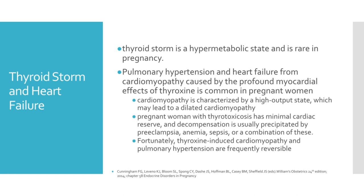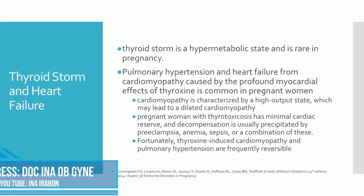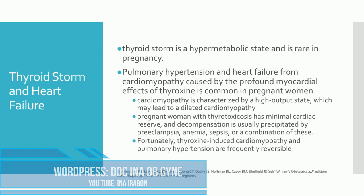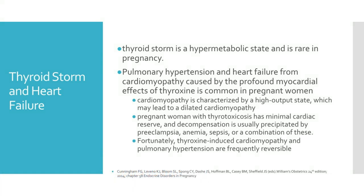And finally, fetal thyrotoxicosis after maternal thyroid gland ablation, usually with 131-I radioiodine, may result from transplacental thyroid-stimulating antibodies. Thyroid storm and heart failure are both acute and life-threatening in pregnancy. Thyroid storm is a hypermetabolic state and is rare during pregnancy. In contrast, pulmonary hypertension and heart failure from cardiomyopathy caused by the profound myocardial effects of thyroxine is common among pregnant women. Cardiomyopathy is characterized by a high output state which may lead to a dilated cardiomyopathy. The pregnant woman with thyrotoxicosis has minimal cardiac reserve, and decompensation is usually precipitated by preeclampsia, anemia, sepsis, or a combination of these conditions. Fortunately, thyroxine-induced cardiomyopathy and pulmonary hypertension are frequently reversible.